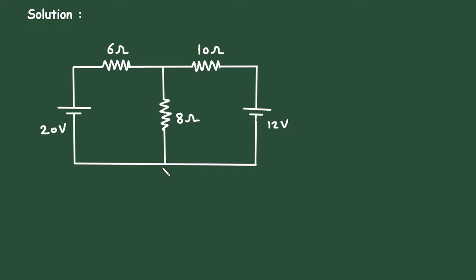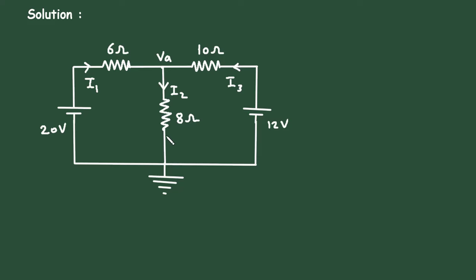First of all, let's assume this is a reference node or ground node with 0 voltage. Let's assume this is a node A with voltage VA. Let's assume this is current I1, this is current I2, and this is current I3. All the currents direction towards this reference node, from the positive terminal of the battery to this reference node.